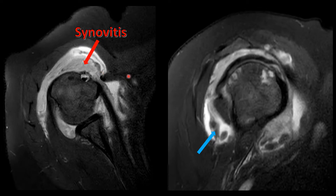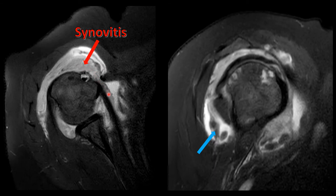We have here fluid-sensitive images with fat suppression on the axial and sagittal oblique of the shoulder. We see that there is distension of the glenohumeral joint as well as the subdeltoid/subacromial bursa extending into the subcoracoid bursa. This distension has several regions that look very high on the fluid-sensitive image, which is mostly consistent with fluid, but then there are other regions which are intermediate in signal intensity.